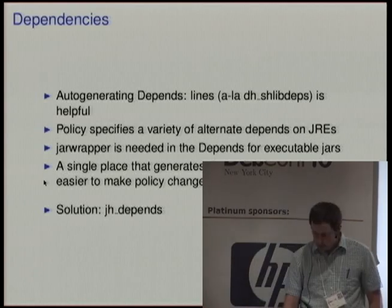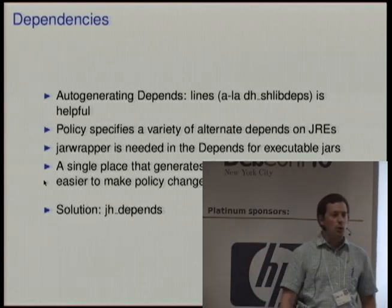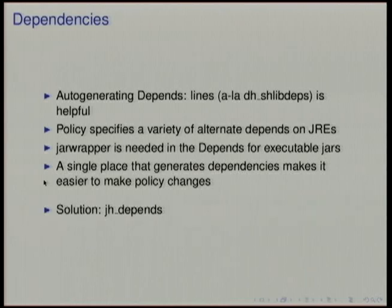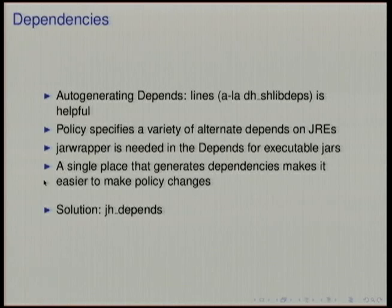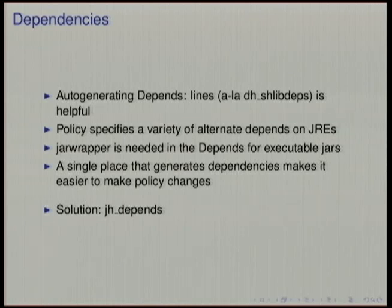Now, dependency lines. After having put all of your libraries in build-depends, put all of them in your class path and in your manifest entry, putting them in your depends line as well is also tedious. Fortunately we can do something about that. There are also a few other things you need in your depends lines like alternate depends on different JREs and virtual packages, and if you've got an executable jar you also need jar-wrapper in your dependencies. So we have jhdepends. The advantage of jhdepends is it's a single place where all of this happens for you, so you don't have to write the code, and if we change any of this in policy it'll all happen automatically.